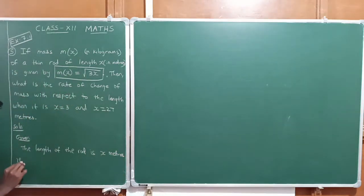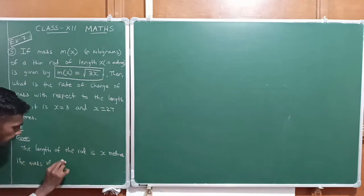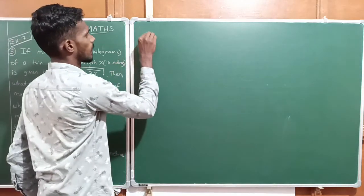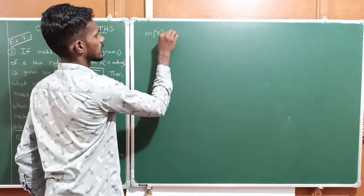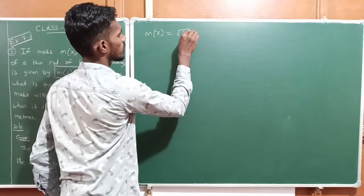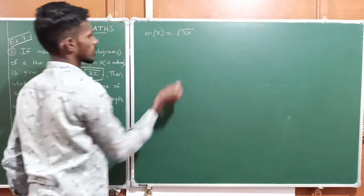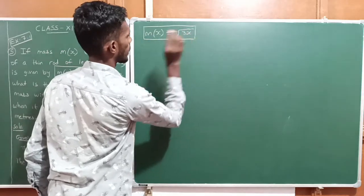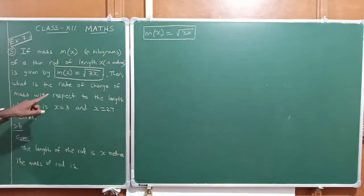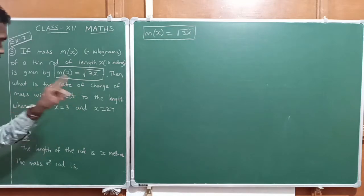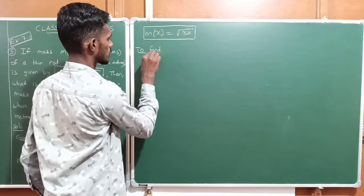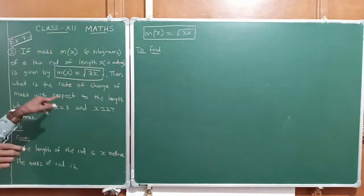The length of the rod is x meters. Then the mass of the rod is given by m(x) = √(3x). This is the mass function. Then we have to find the rate of change of mass with respect to the length.